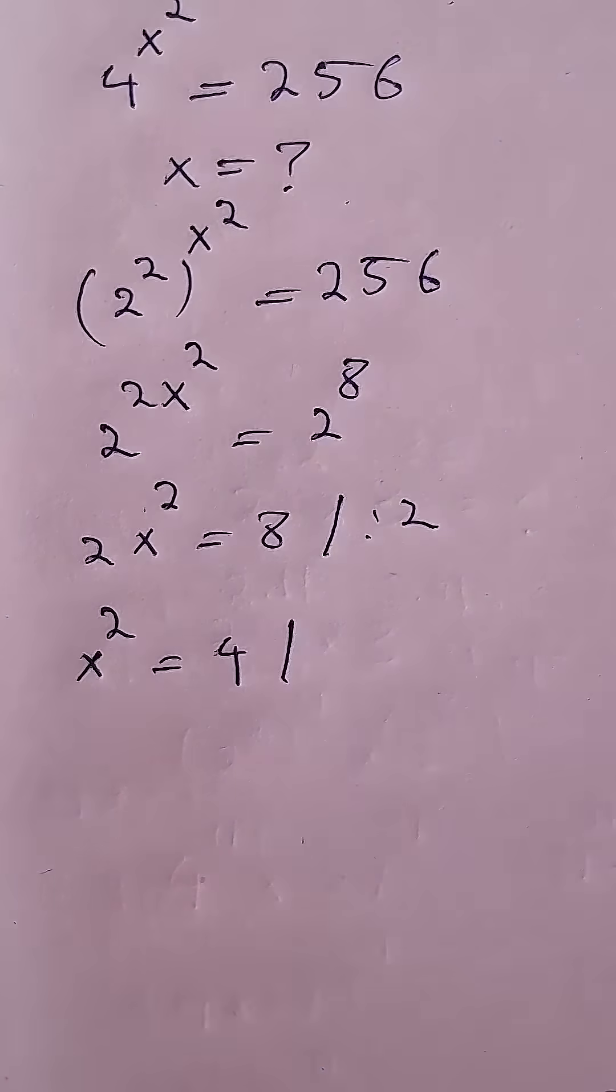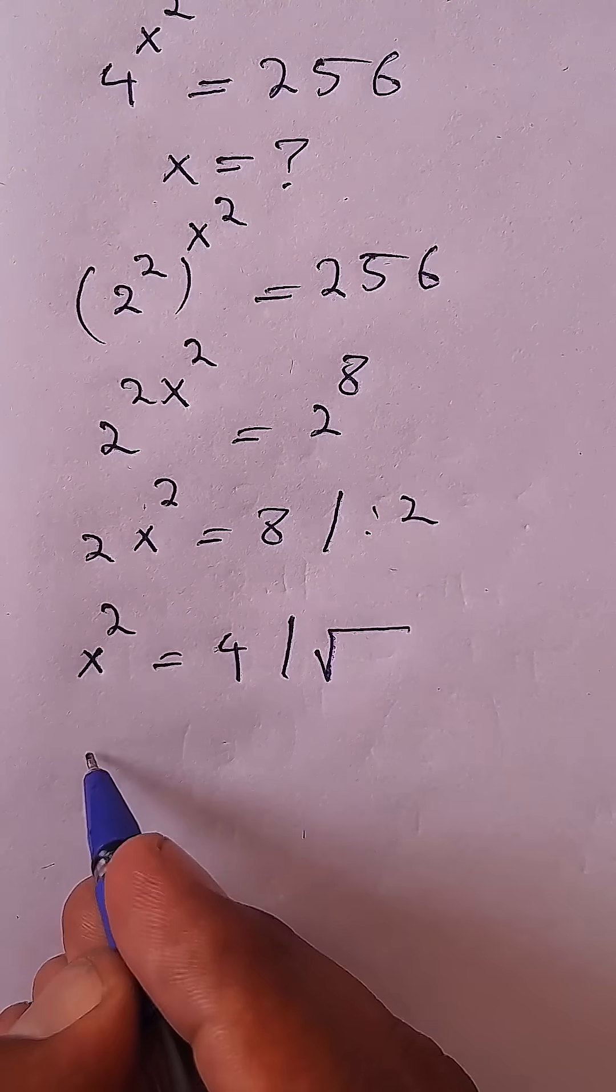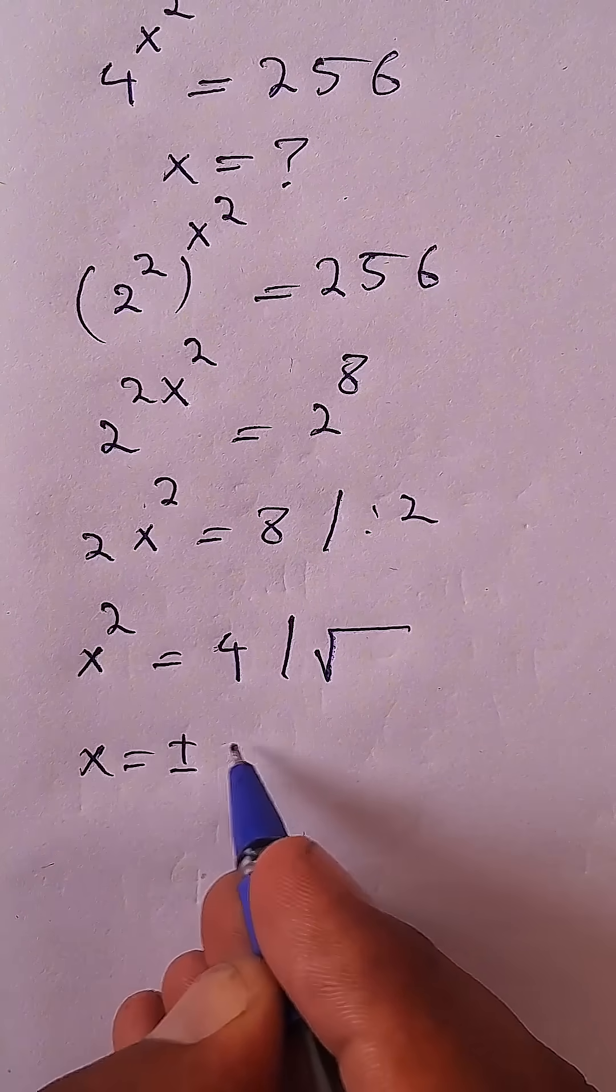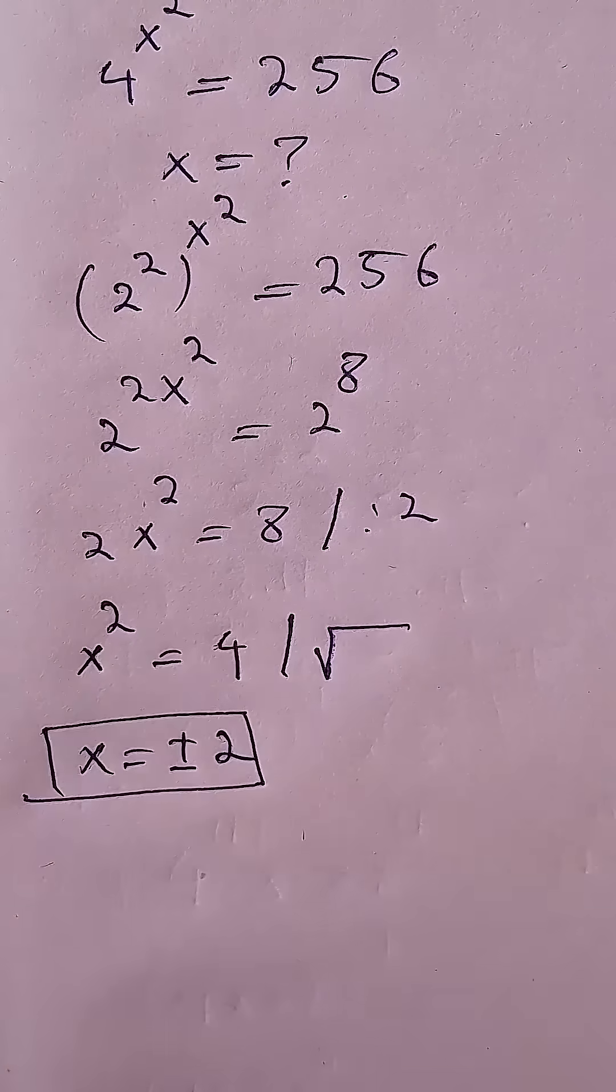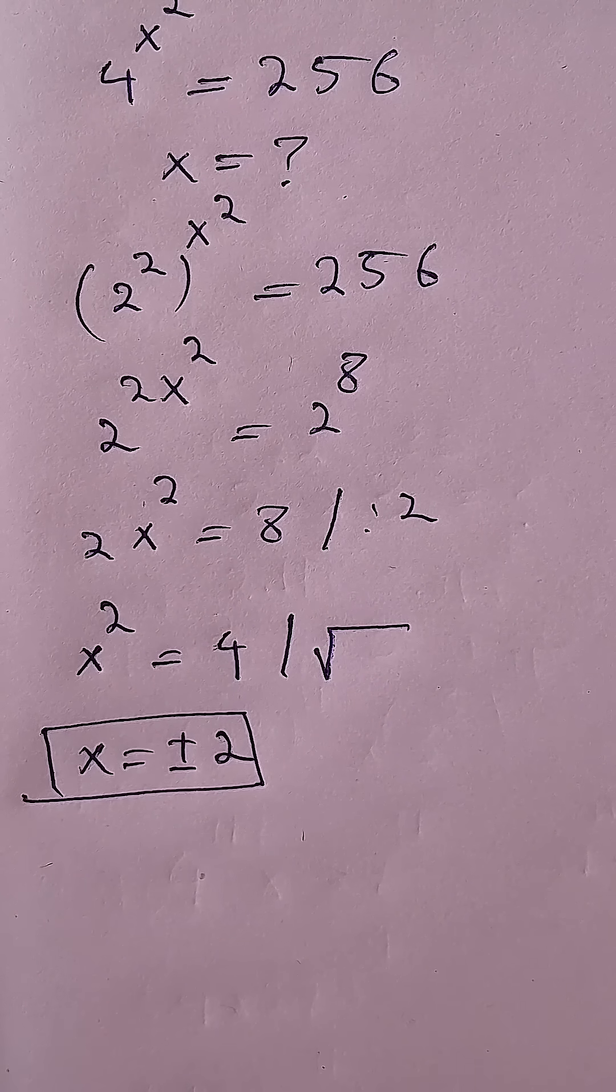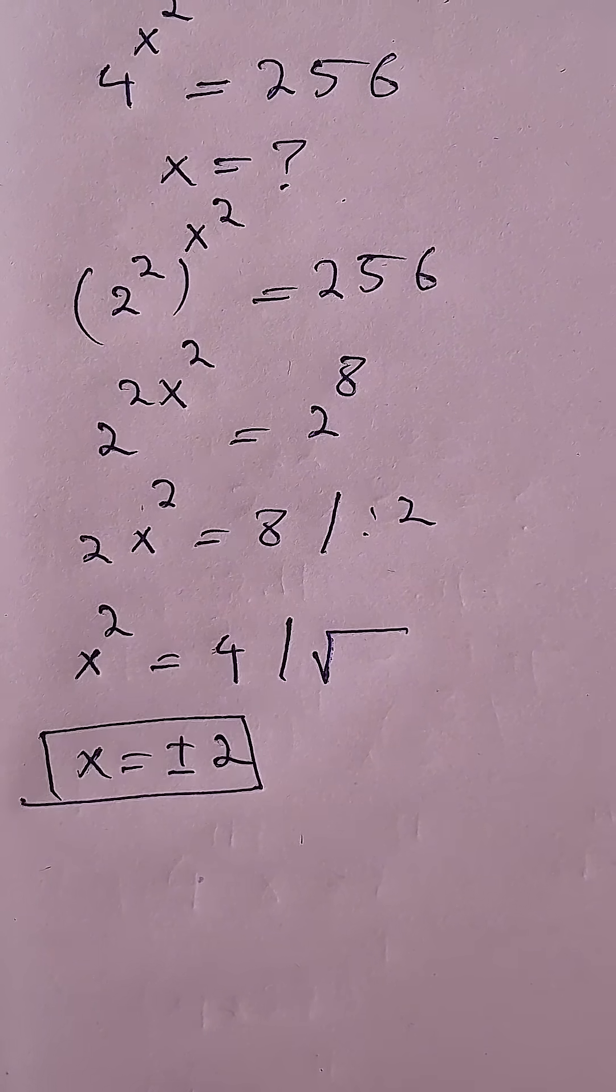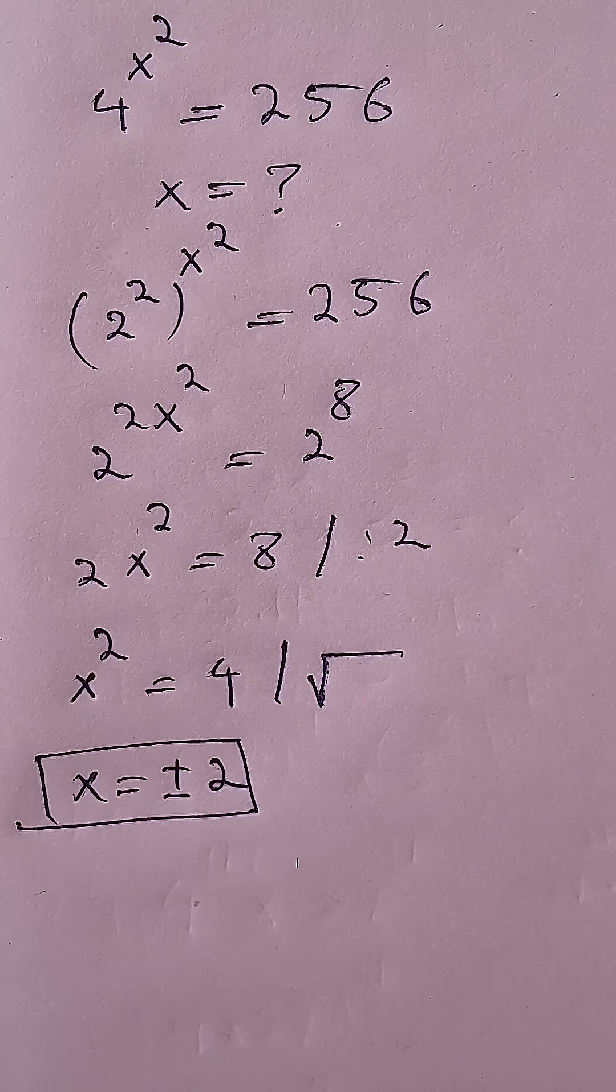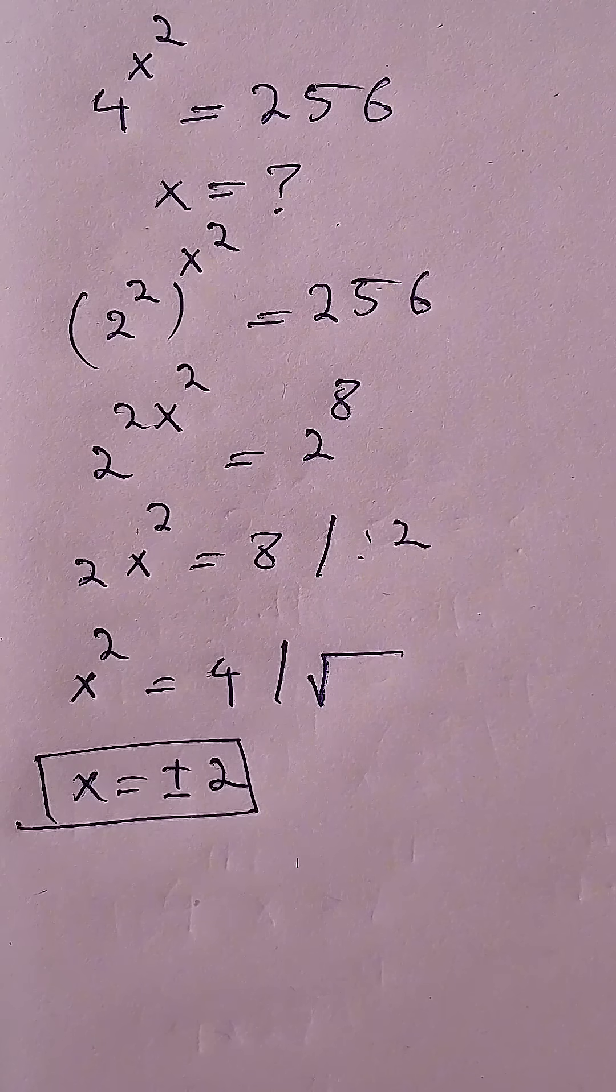And then if I take the square root of both sides of the equation, x equals to positive or negative 2. So positive 2 or negative 2 is the solution or the value in this equation of 4 to the power of x squared equals to 256.